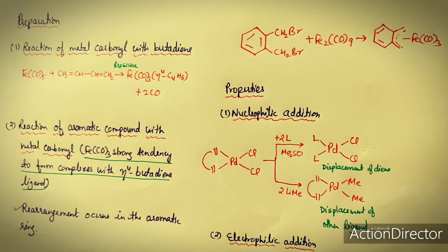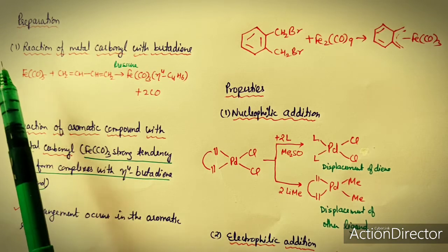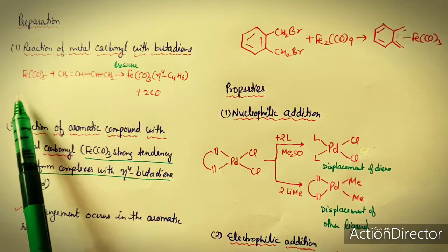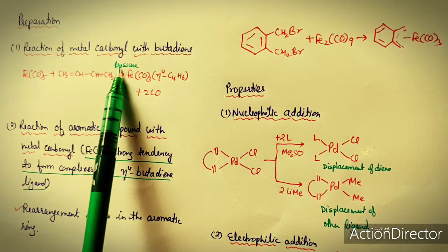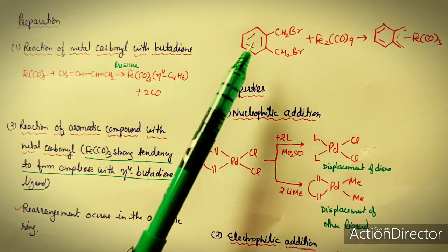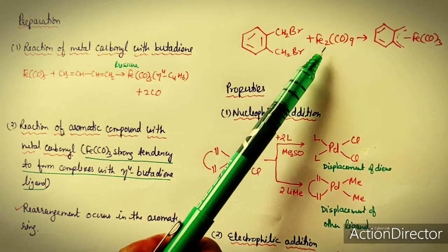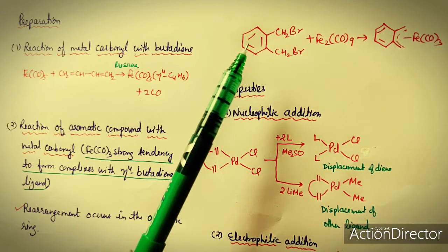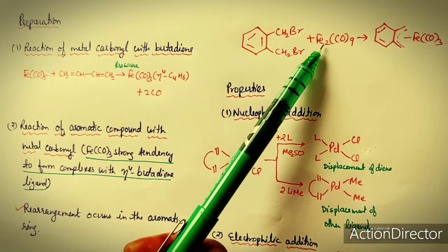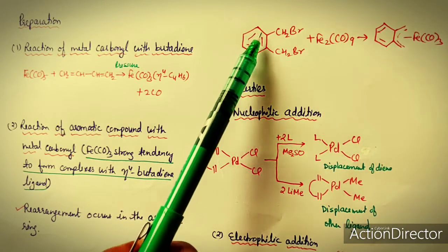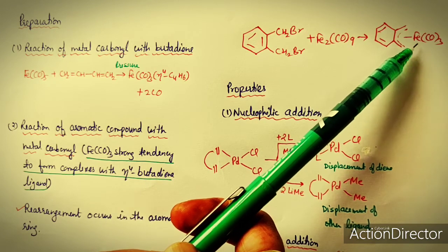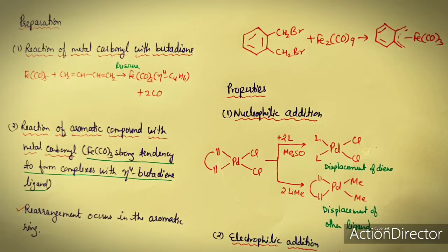Methods of preparation of butadiene complexes: Two main reactions are used. First, the reaction of metal carbonyl with butadiene at high pressure to directly form metal–butadiene complexes. Second, the reaction of aromatic compounds with metal carbonyls, where rearrangement of the aromatic ring occurs and two of the three double bonds participate to form the butadiene complex. So aromatic compounds can also form butadiene complexes.